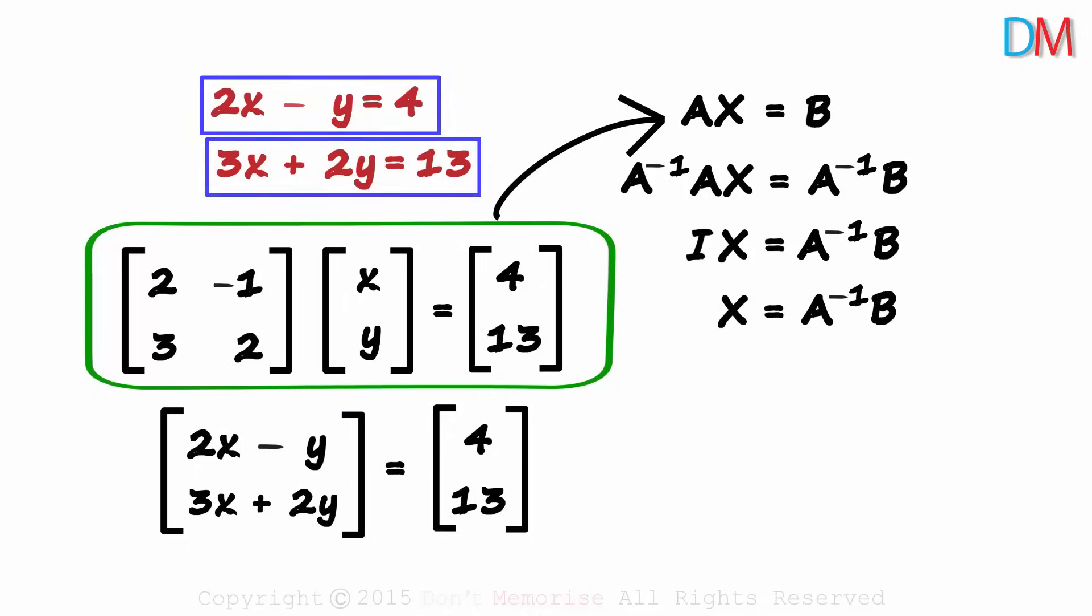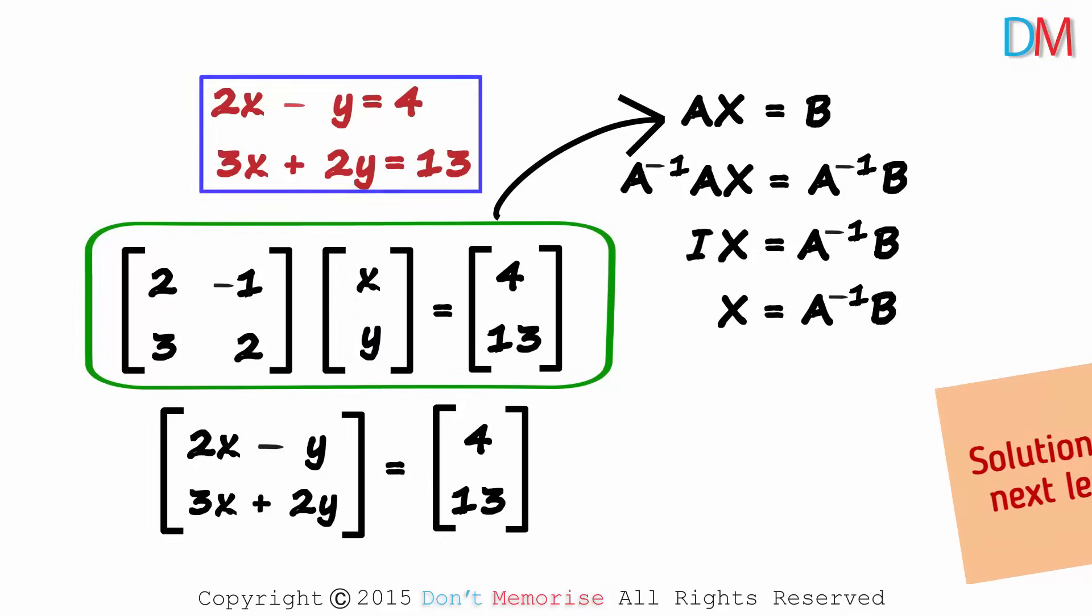So when we are given the two equations, we write it in this form, find the inverse of this matrix and multiply it with this to get matrix X. And that will give us the values of the variables. We will solve this example in the next lesson.